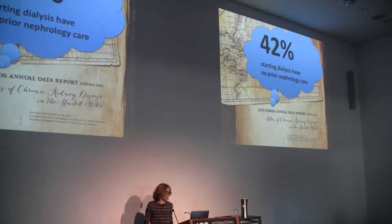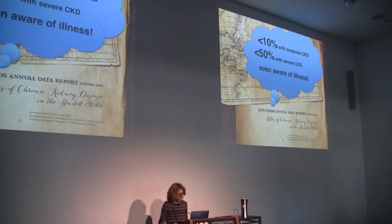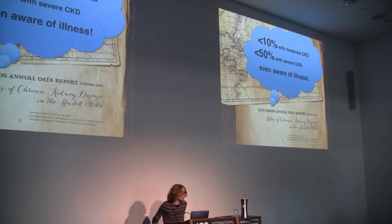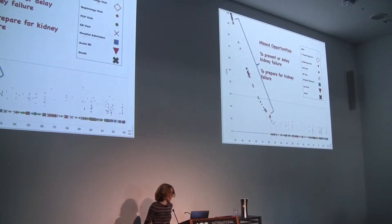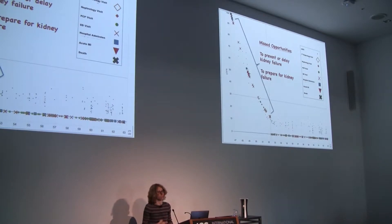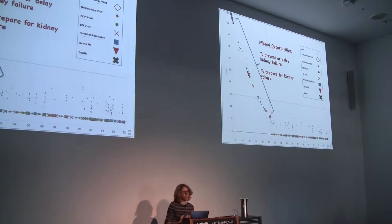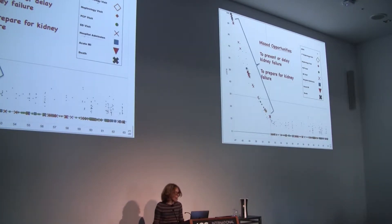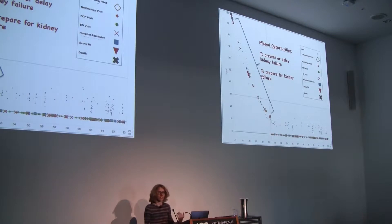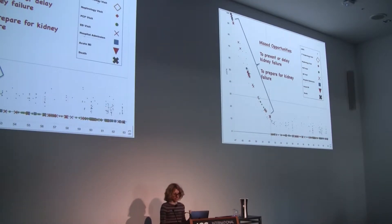42% of patients starting dialysis have had no chronic nephrology care. Less than 10% of people with moderate chronic kidney disease and less than 15% of people with severe chronic kidney disease are even aware that they have a problem with their kidneys. Part of the reason is threshold-y thinking: clinicians use an EGFR rating of 30 as a virtual value to refer people to a nephrologist, and there's an even lower threshold used to put somebody on dialysis. These thresholds were developed as guidelines over the years, but it's not clear exactly where they came from.